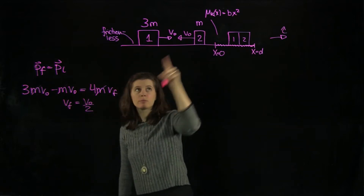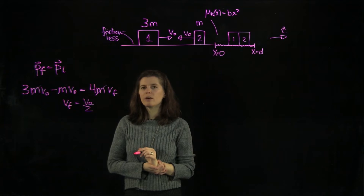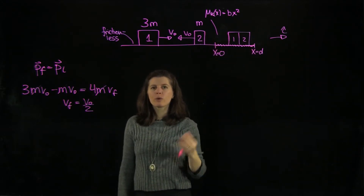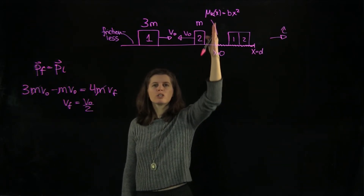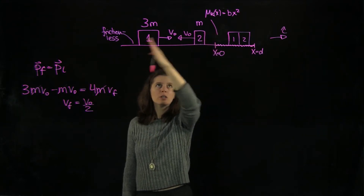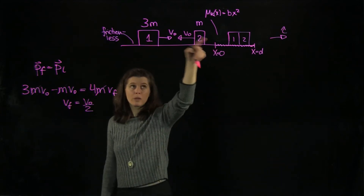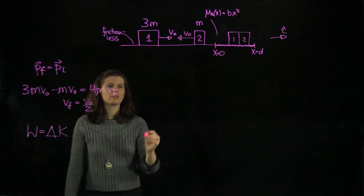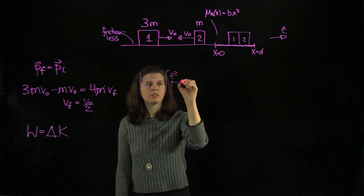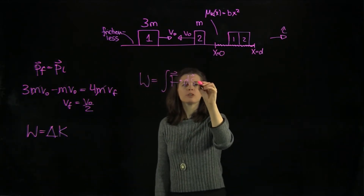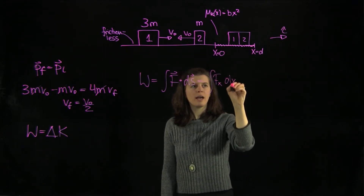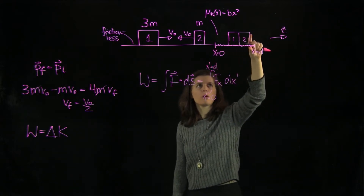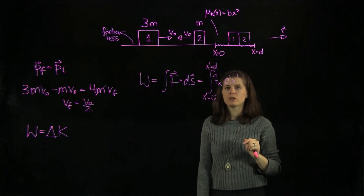In order to find v0, we also have to consider energy. We have to use the work-energy principle, because this combined block is going to slide onto the rough surface. We know the initial conditions from the momentum result. The block eventually comes to rest at x equals d, which we'll use in a moment.